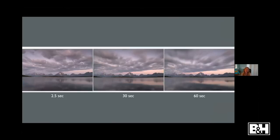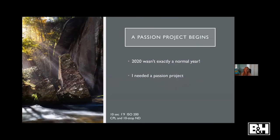Here are various shutter speeds showing how they impact an image differently. At two and a half seconds, it's just enough to smooth the water but there's no cloud movement. At 30 seconds you start to get a little movement in the clouds. At a full minute you get a beautiful range of motion as clouds streak across the sky and you can really get a sense of how fast they're moving. Racing clouds make the image feel very dynamic and fast-moving, so there are many ways long exposures translate a landscape into your own individual interpretation.